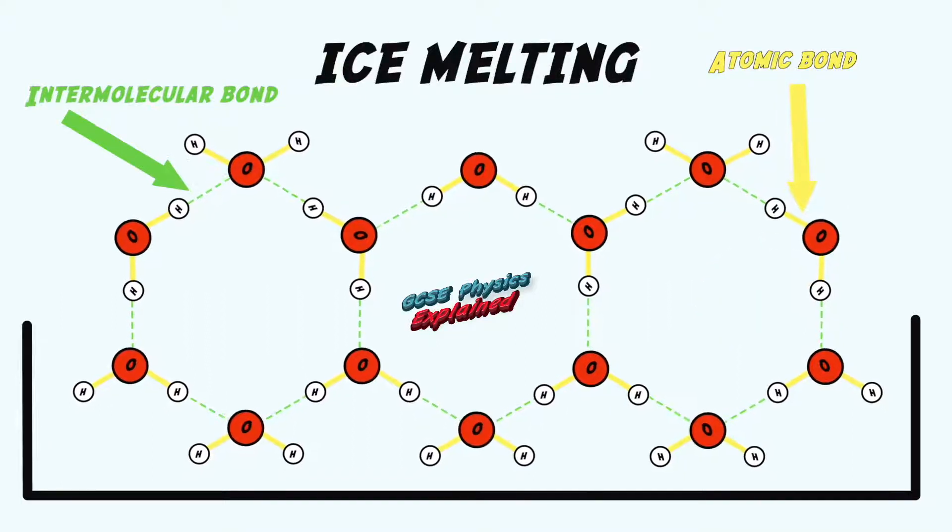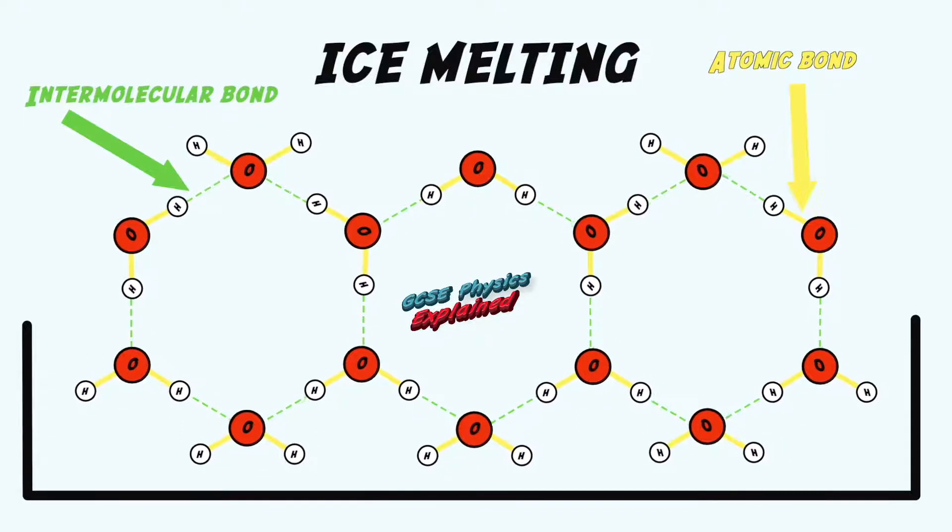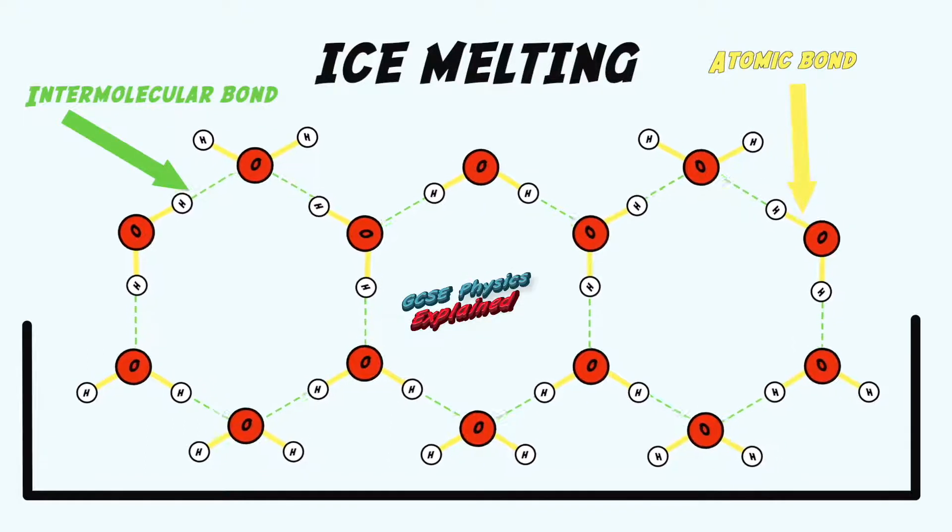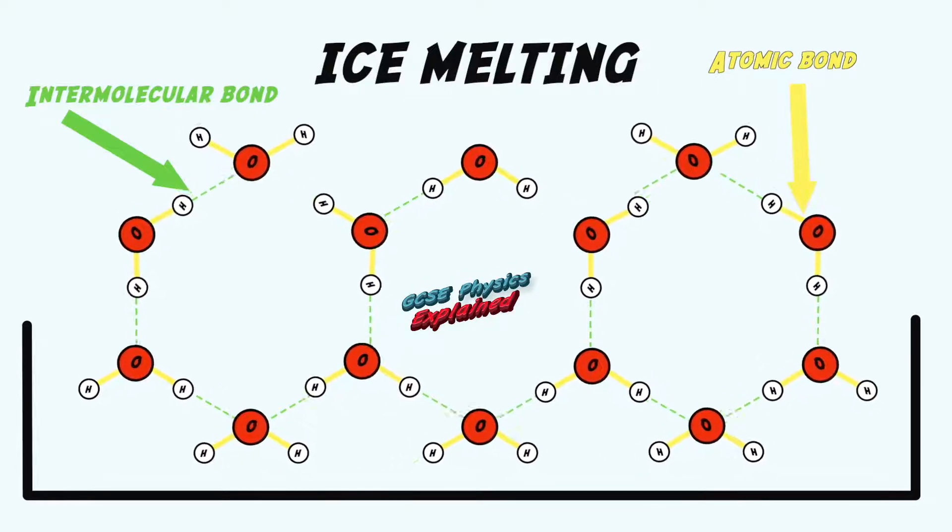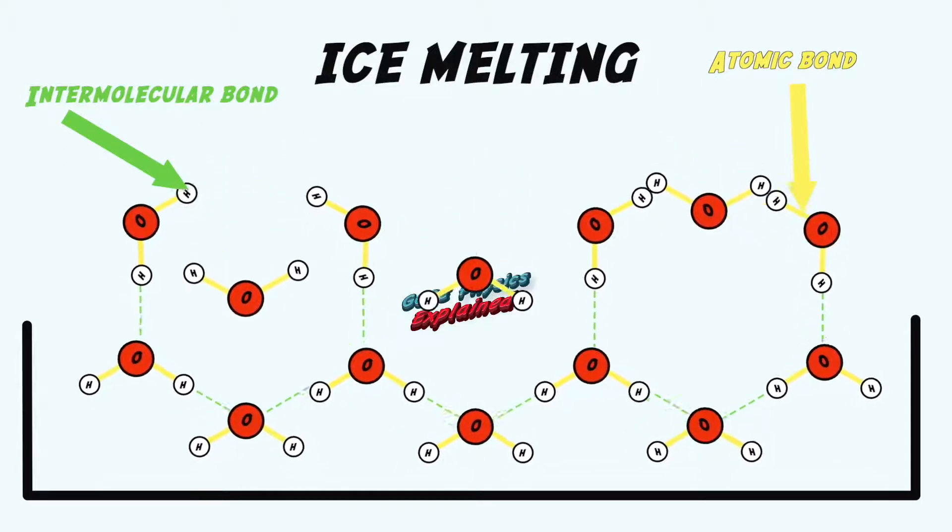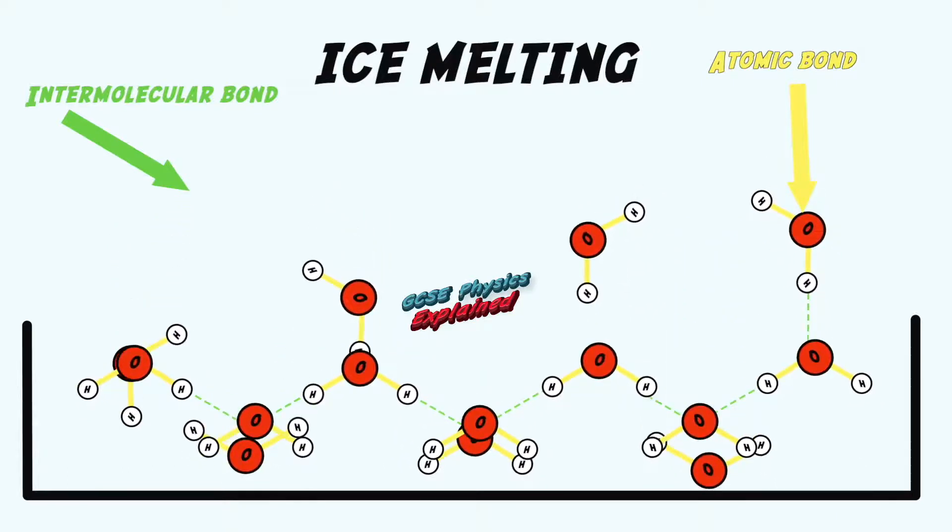In a solid, it's the intermolecular bonds that keep the molecules in a rigid solid shape. As the molecules gain energy, they eventually have enough energy to overcome the intermolecular bonds holding them in place.